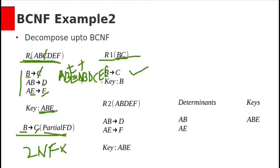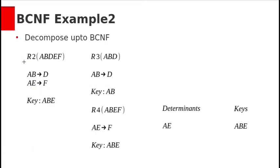Now check the modified original relation with C removed. Remaining attributes are A, B, D, E, F with functional dependencies AB derives D and AE derives F, and key ABE. The determinants AB and AE are not keys themselves, so this is not in BCNF. Decompose it: remove D and create relation R3 with attributes A, B, D where AB derives D. In R3, the primary key is AB, there are no partial or transitive dependencies, and the determinant AB equals the key, so R3 is in BCNF.